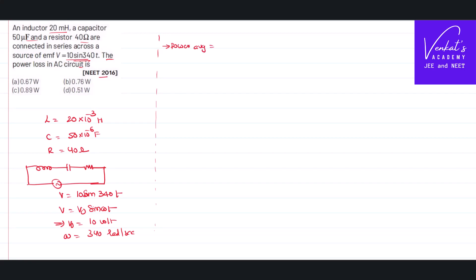Power average can be written like I_average squared times R. How can I get I_average? That is EMF voltage maximum V₀ by Z, whole squared, times R, where Z is called the impedance of the circuit.